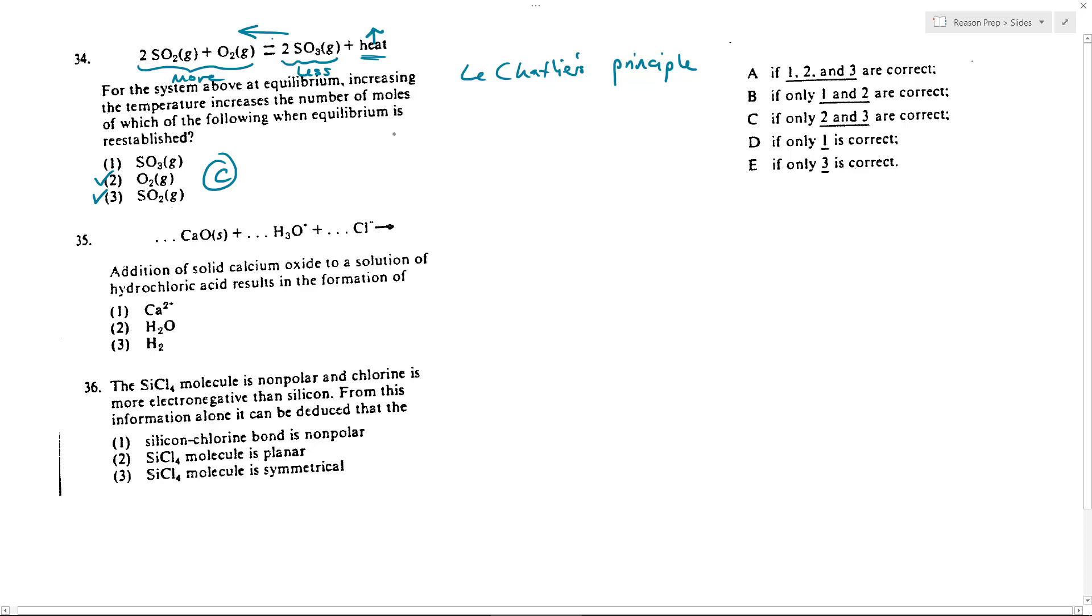Now in problem 35 we've got this reaction, we're adding calcium oxide to a strong acid, HCl, and we want to know what products are formed. So when you mix an oxide, a metal oxide, with an acid,